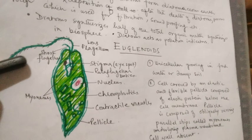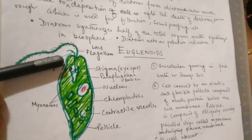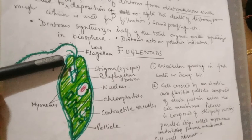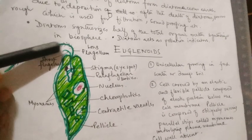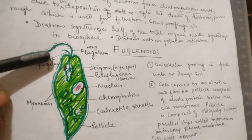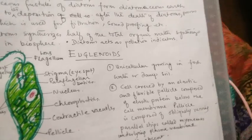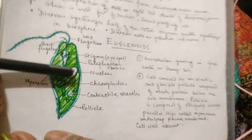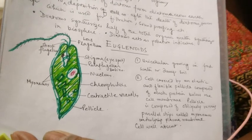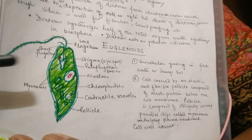The long flagellum is tinsel type, meaning it has fine hair-like structures called mastigonemes. In addition to flagellar movement, euglenoids can also have a wiggling movement by contraction and expansion of their body.